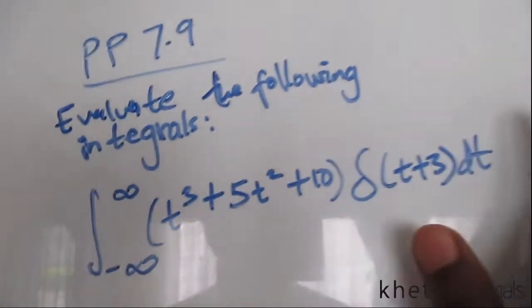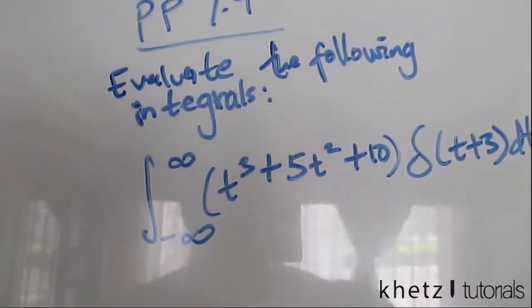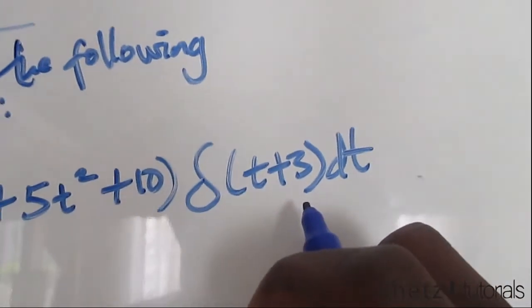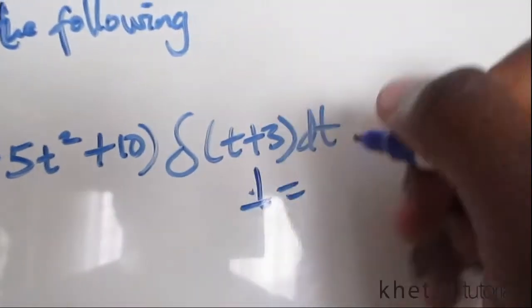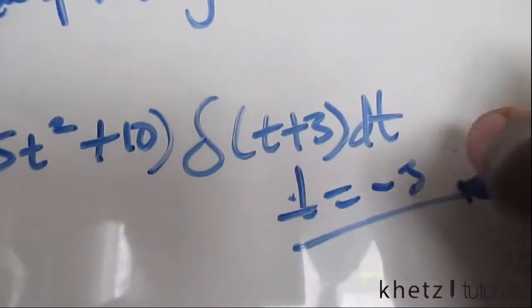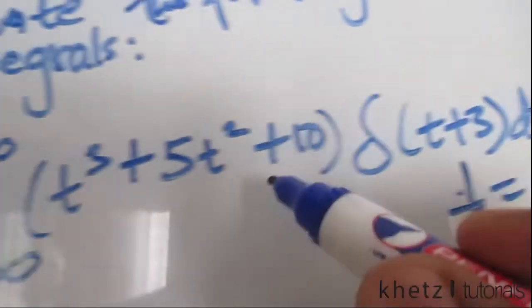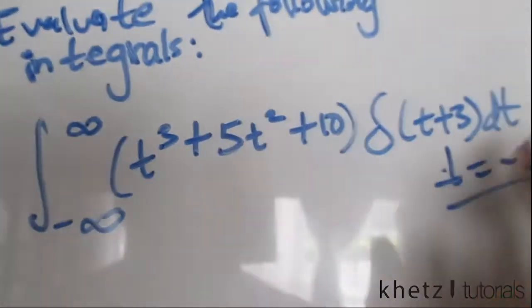This is what's going to happen in this case. We're going to ignore the limits as I said, and we're going to look at where the impulse actually occurs. This impulse occurs at t equals minus 3, and therefore we are going to substitute minus 3 into this function to find the integral.